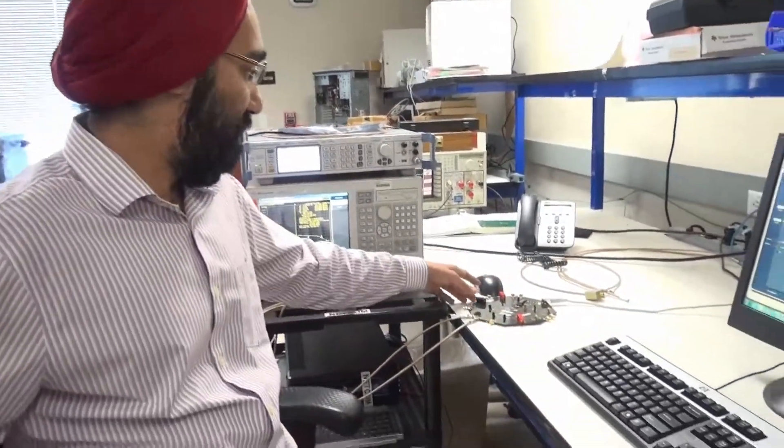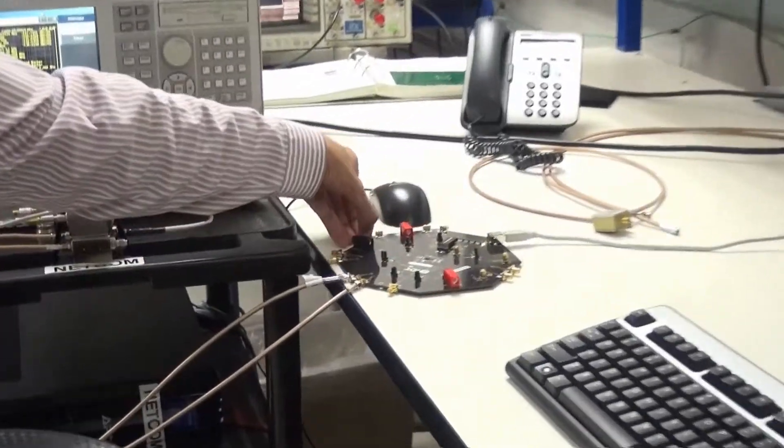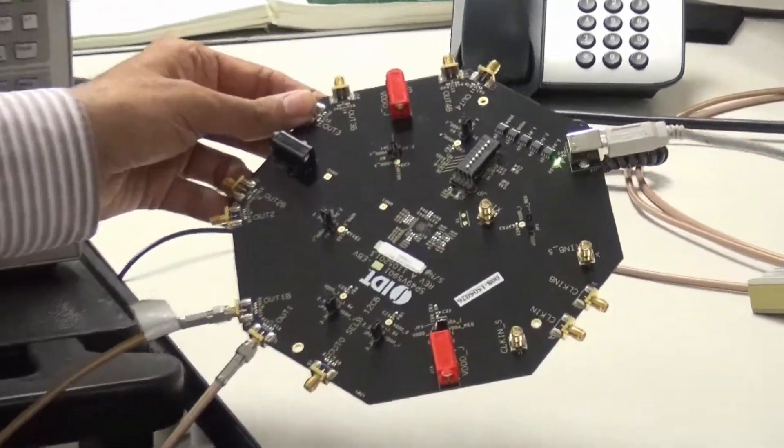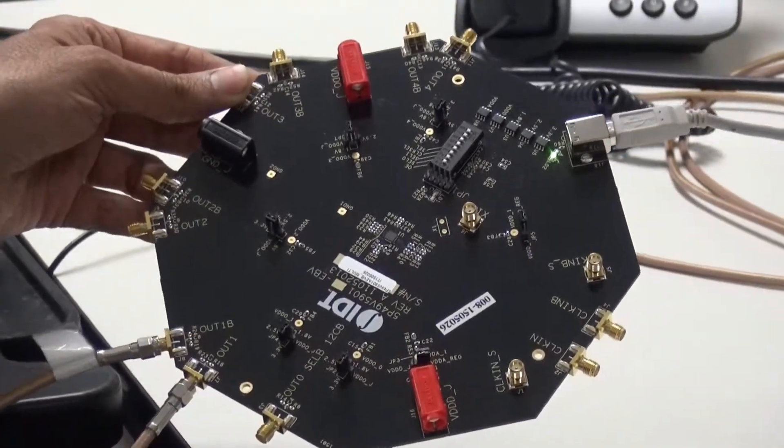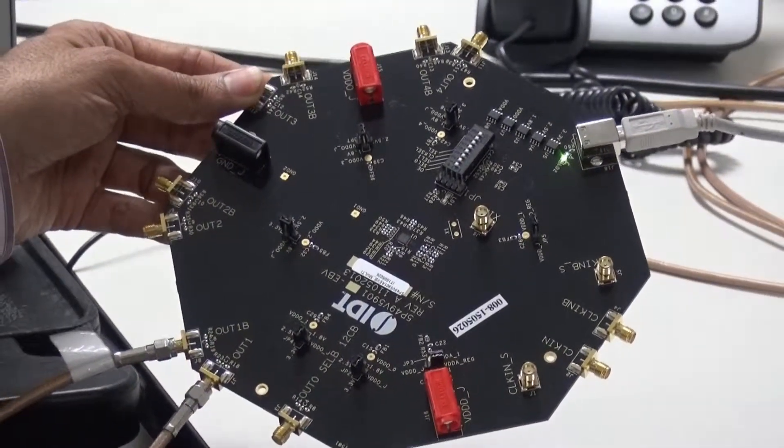Now, I'm going to start the lab demonstration. I have with me an evaluation board. The evaluation board is powered by the USB cable and is also used to control the VersaClock 5.